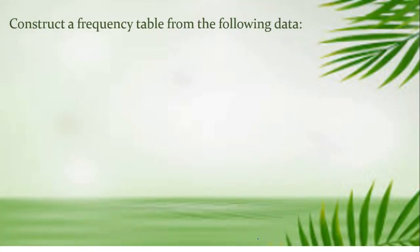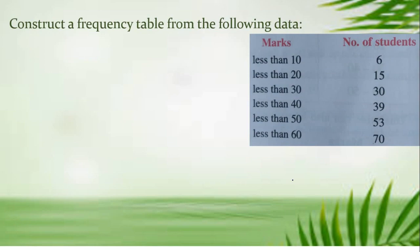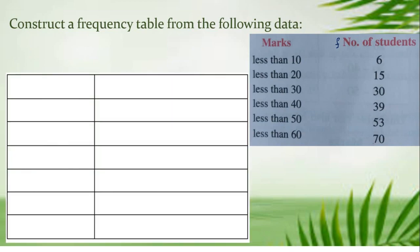Now we are going to construct a frequency table from the given data. A cumulative frequency table is given with values: less than 10, less than 20, less than 30, and so on going on. The number of students is also given, which means the cumulative frequency is given. So the first column will be marks and the next one is the frequency. The class intervals go: less than 10, less than 20, less than 30, continuing on.